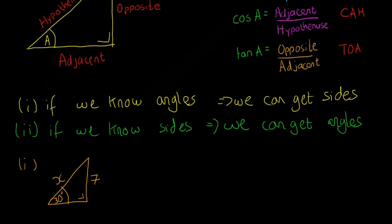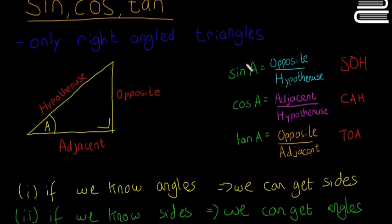We have to think: why are we going to use sine, cos, or tan? Since we have angle 30, we have the opposite side to 30 and the hypotenuse. If you look at opposite and hypotenuse, they're in this one here, so we're going to use sine of A.